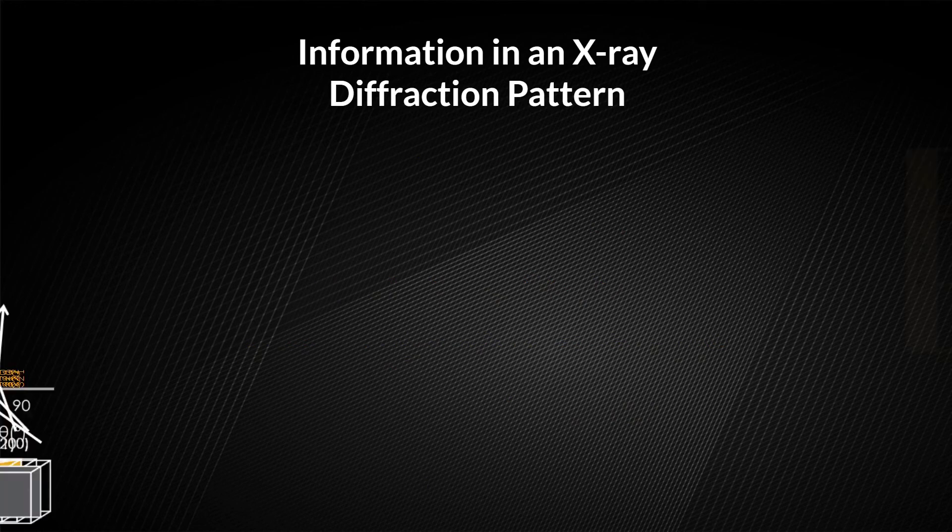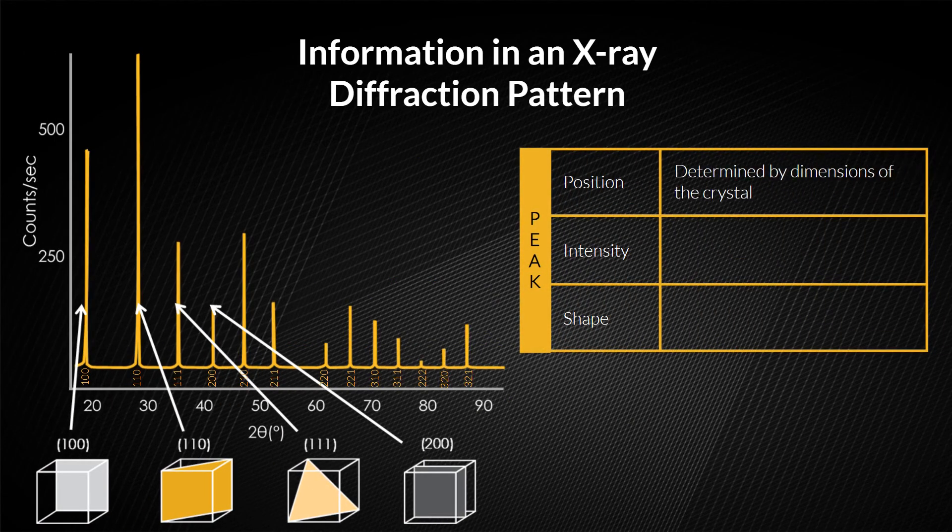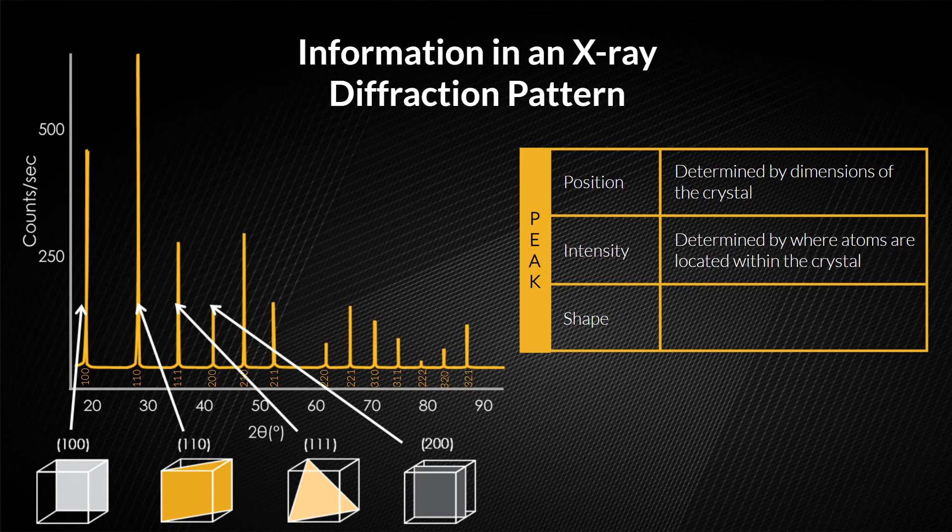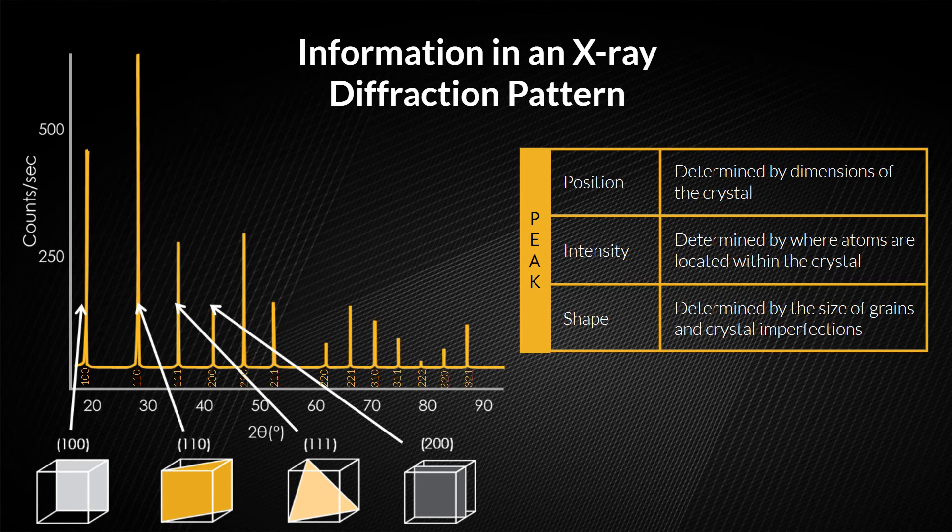The peak position is determined by the dimensions of the crystal, specifically the interplanar distances. The peak intensity is determined by the structural chemistry of the crystal, or where the atoms are located within the crystal. The peak shape is determined by the size of the grains and crystal imperfections.